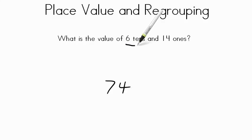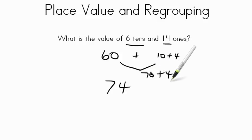If we look here, 6 tens is the same as 60. And here we have 14 ones, 14 ones is 1 ten and 4 ones. We can add 60 plus 10 to get 70 and then add 4 more on. So 60 and 10 is 70 plus 4. 70 plus 4, we get a value of 74.